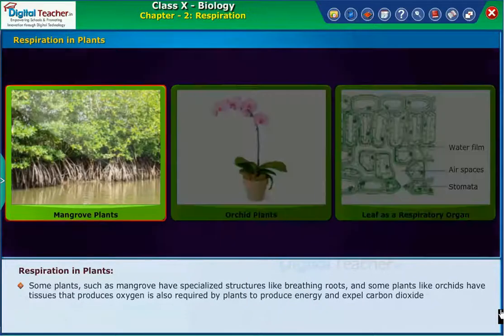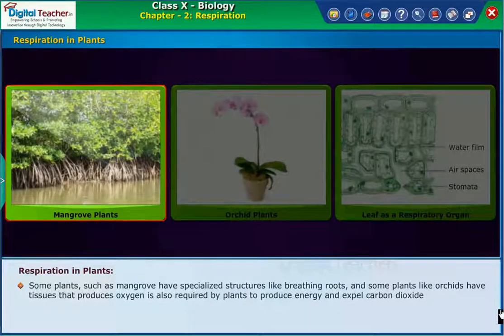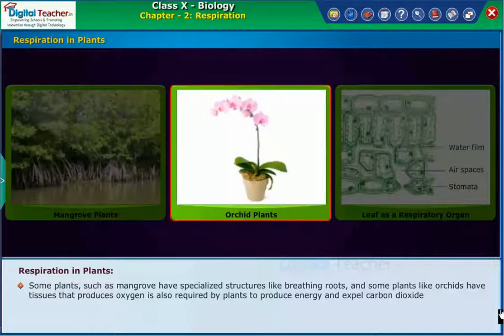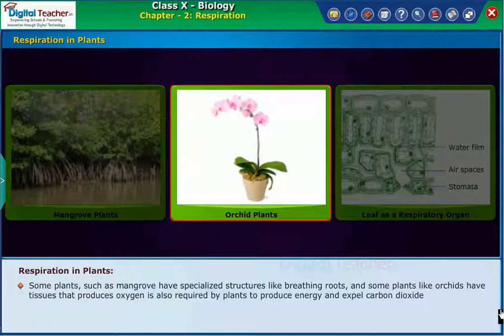Some plants such as mangroves have specialized structures like breathing roots, and oxygen is also required by plants to produce energy, expelling carbon dioxide in the process.